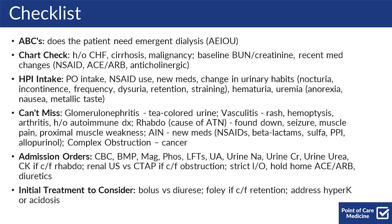Ask about changes in their urinary habits including nocturia, incontinence, frequency, dysuria, retention, and straining, as well as hematuria. You can also ask them about uremia symptoms such as anorexia, nausea, or a metallic taste in their mouth.